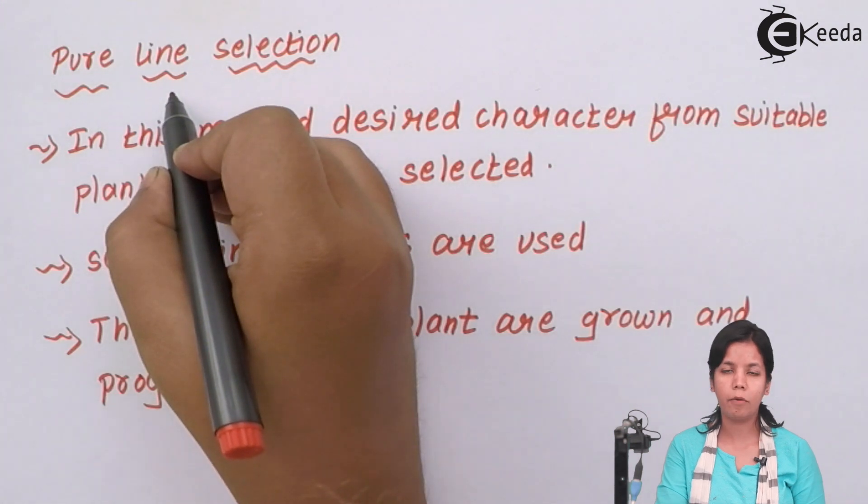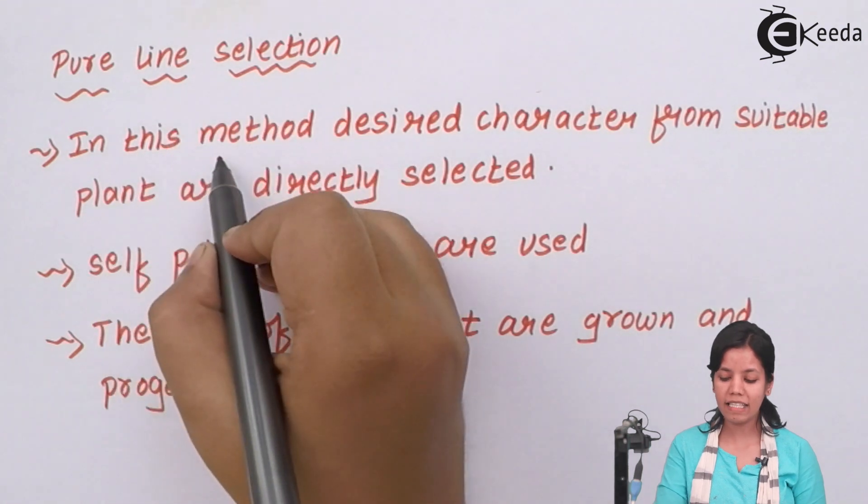Pure line selection. The next type of selection for parent of plant breeding which is more easy. In this type of selection desired characters from suitable plants are directly selected.